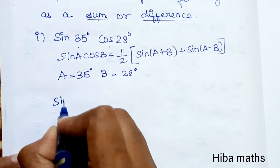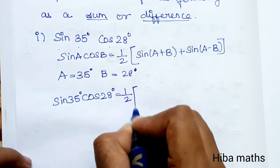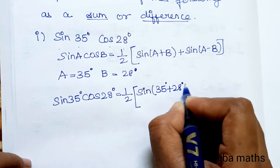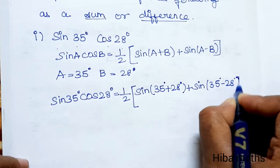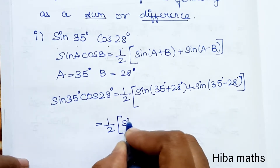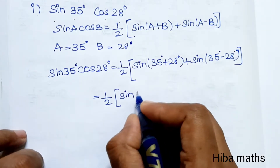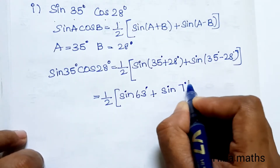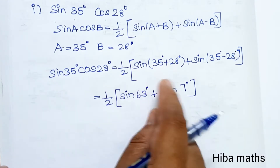Sin 35° cos 28° = 1/2 [sin(35° + 28°) + sin(35° − 28°)] = 1/2 [sin 63° + sin 7°]. This is the answer — substitute A and B values into the formula: 1/2 [sin 63° + sin 7°].